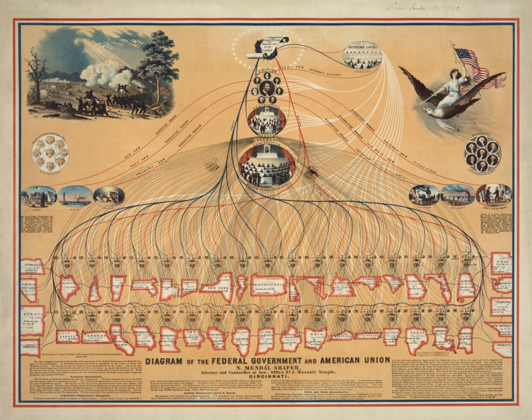In addition to departments, a number of staff organizations are grouped into the Executive Office of the President. These include the White House Staff, the National Security Council, the Office of Management and Budget, the Council of Economic Advisors, the Council on Environmental Quality, the Office of the U.S. Trade Representative, the Office of National Drug Control Policy, and the Office of Science and Technology Policy. The employees in these United States government agencies are called federal civil servants.